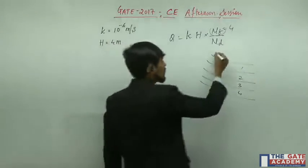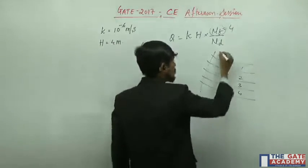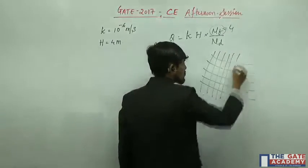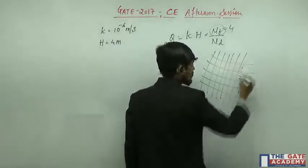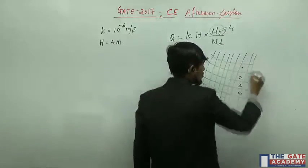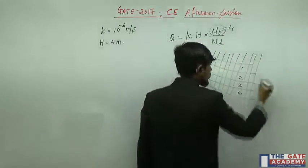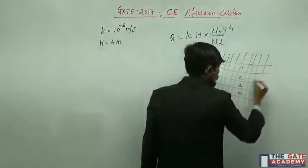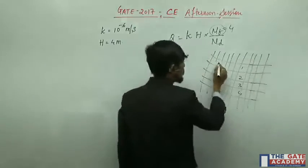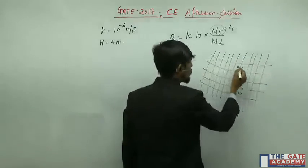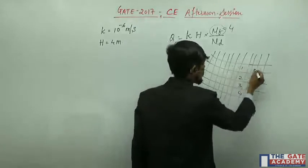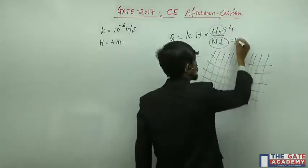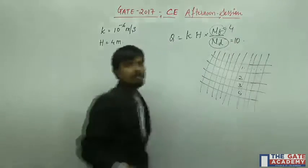Drawing 11 equipotential lines and counting the spaces between them gives the number of potential drops: 1, 2, 3, 4, 5, 6, 7, 8, 9, 10 — so Nd equals 10.